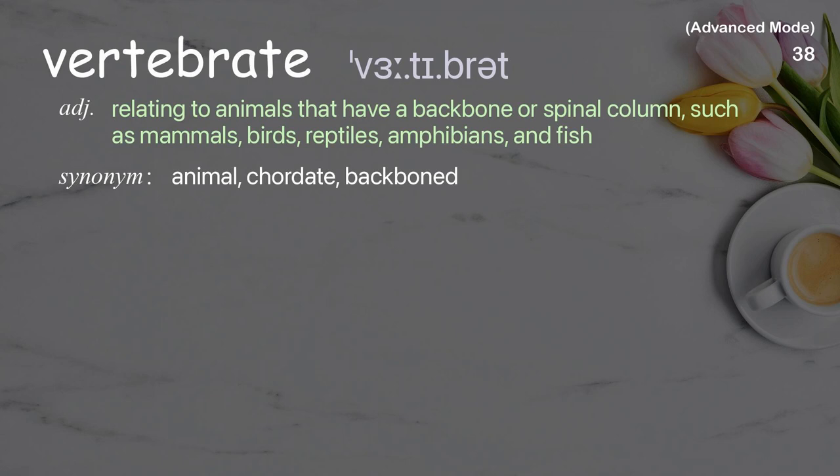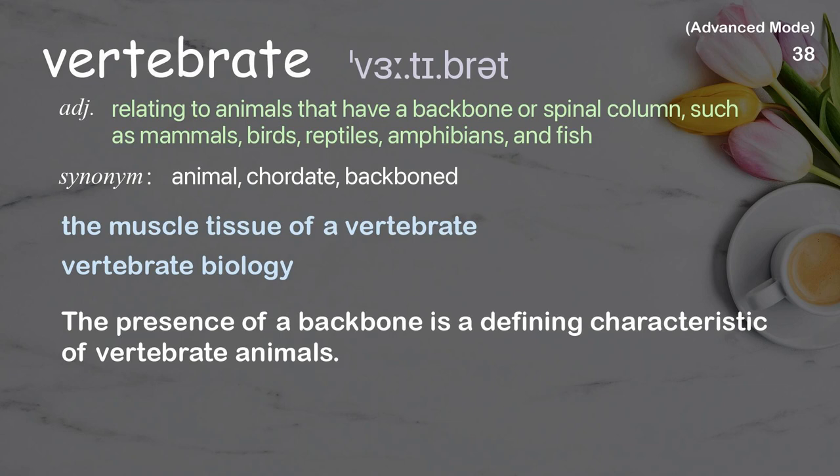Vertebrate: Relating to animals that have a backbone or spinal column, such as mammals, birds, reptiles, amphibians, and fish. Examples: The muscle tissue of a vertebrate, Vertebrate biology. The presence of a backbone is a defining characteristic of vertebrate animals.